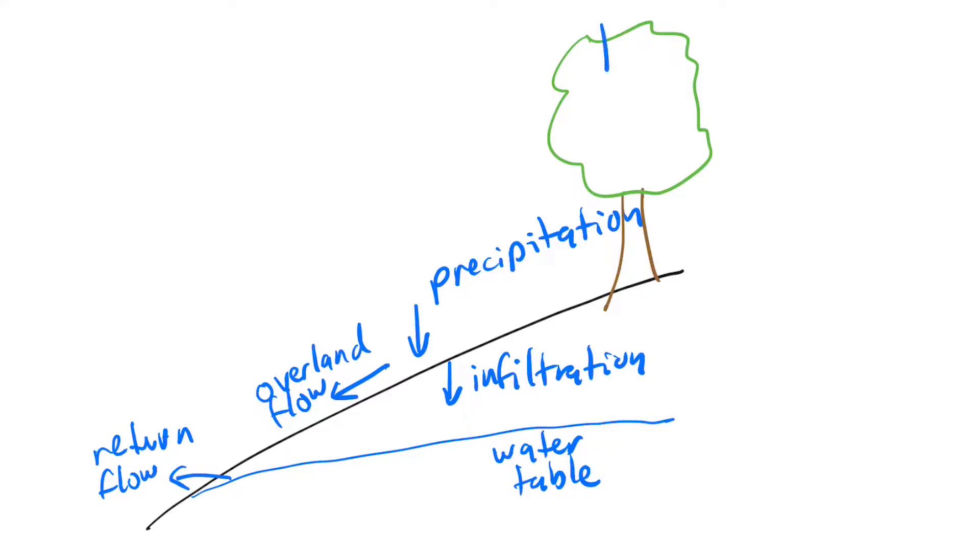Wherever there is vegetation, there is the interception of water that falls on it, and doesn't get to the level of the terrain. There is the transpiration of water from plants to the air, and the evaporation of water from a terrain surface to the air.